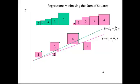We can add these up to see if this line produces a smaller sum of squared residuals than our initial line. We could go on trying different lines and comparing the sum of squared residuals to see which gives the smallest value.